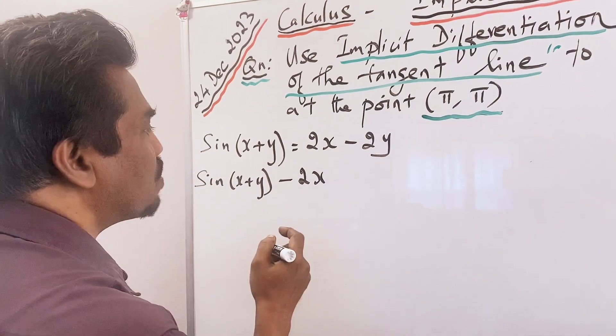Now let us differentiate with respect to x. We have to apply implicit differentiation to get the differentiated form. So d/dx of sin(x + y) − 2·dx/dx + 2·dy/dx = 0, and when you differentiate 0 it is automatically 0.